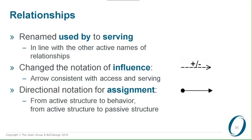As you saw before in one of the pictures, we changed the notation for assignment. Instead of having two black circles at both ends, we now show that it actually has a direction. If you know the standard, it has a big table at the back showing all the relationships, so you can see that it has a direction there — but the notation didn't show that.